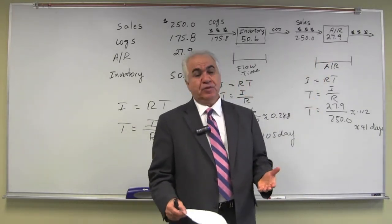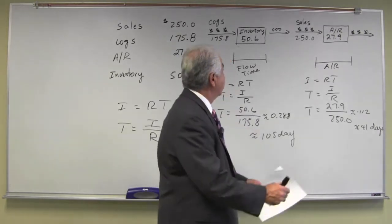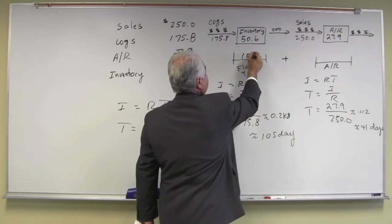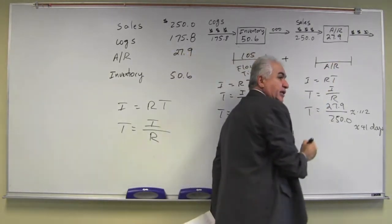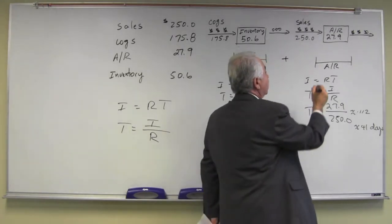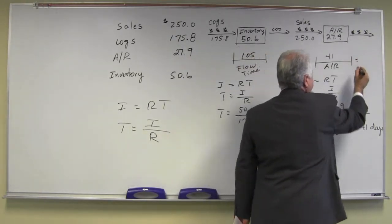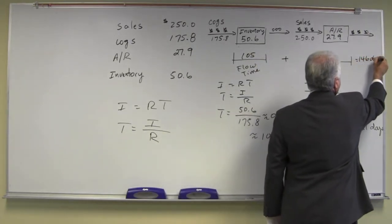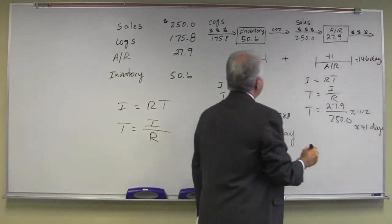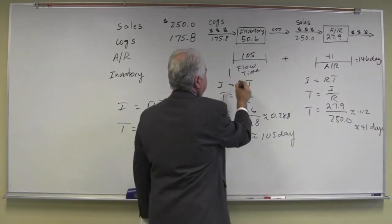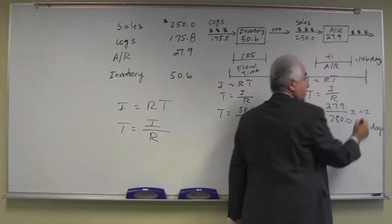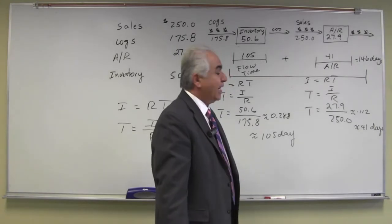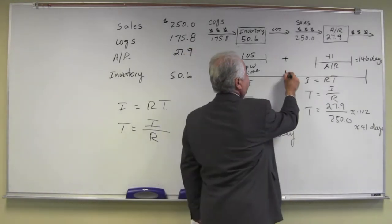Then the next question is, what is our total flow time? Is the factory flow time of 105 days plus the account receivable time of 41 days, which gives us a total number of 146 days. So from the time that we invest our money in the organization until that amount in the form of account receivable is collected and deposited in our account at the bank takes 146 days.